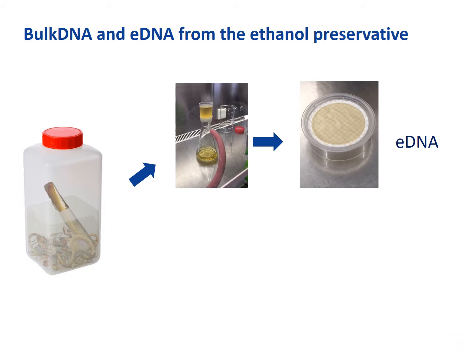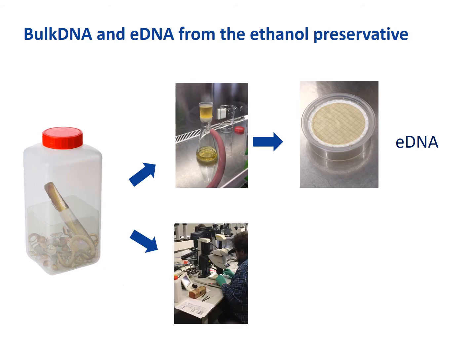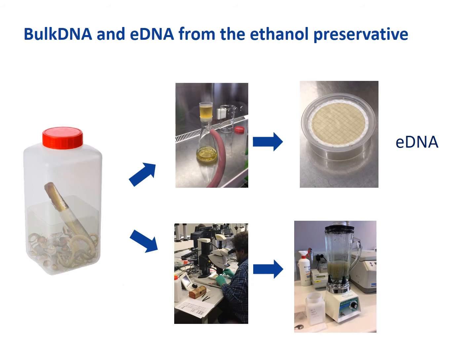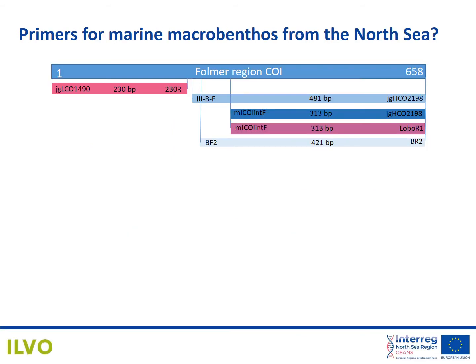Processing of the samples in the lab started with the collection of the ethanol. 200 ml of this ethanol was filtered across a 0.45 micrometer filter, which was then used to extract eDNA. After collection of the ethanol, the macrobenthos organisms were identified morphologically by our taxonomic experts and after morphological identification they were blended into a homogeneous soup, which served as bulk DNA. The next question was which primer set to use to characterize marine macrobenthos from the North Sea. We searched the literature and found five potential good candidates that amplify a portion of the formal region of the cytochrome oxidase C subunit 1 gene.